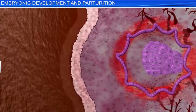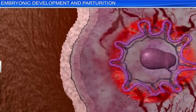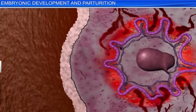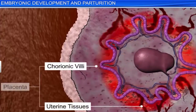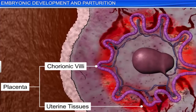As the chorionic villi grow further, they interlock with uterine tissues to form the placenta — a structural and functional unit between the developing embryo and the maternal body.